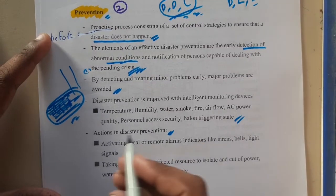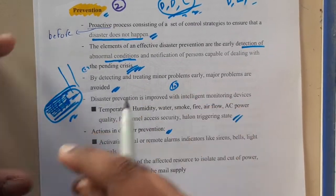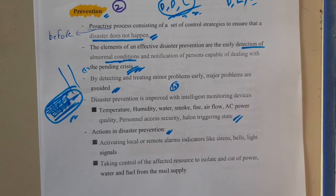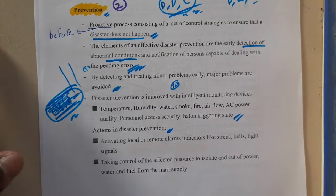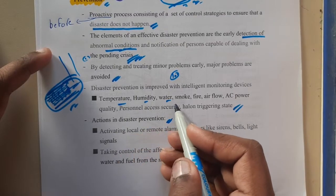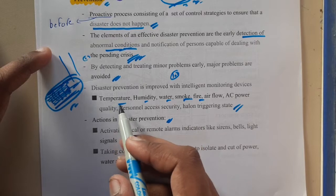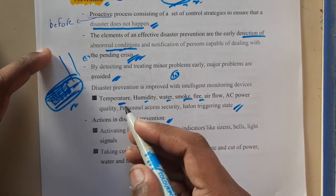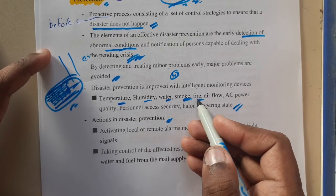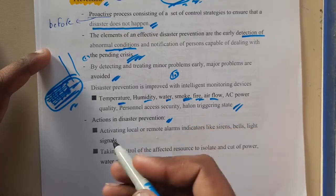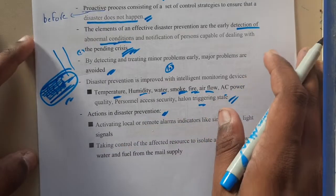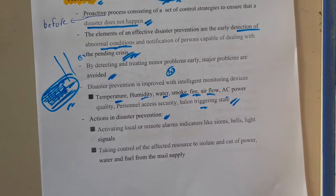These sensors are IoT devices or embedded devices — they sense something and give information. That is the Internet of Things or embedded system operations. Some example sensors include temperature sensors for heat waves or cold waves, humidity sensors for cyclones, water sensors for floods, smoke sensors for fire alarms, airflow sensors for breezes, AC power quality sensors, and various others.